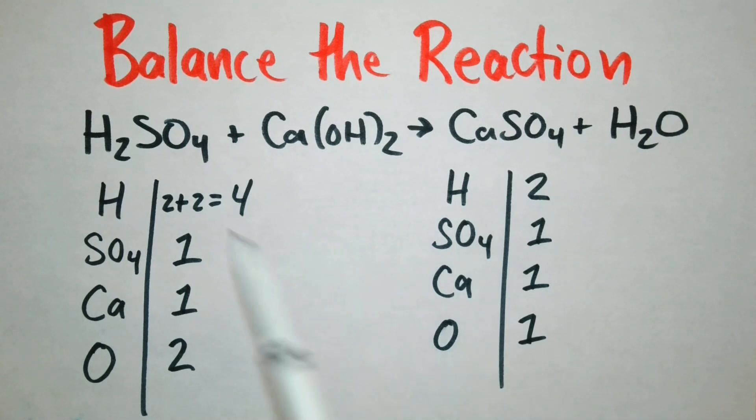So it looks like what is out of balance is we have four hydrogens on the reactant side and only two on the product. We have two oxygens on the reactant side and we only can account for one over here. All right so let's see what we can do to balance this out.